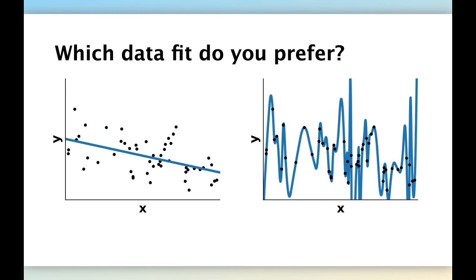For each value x, it will find the exact value of y for the observed data point on the training set. So intuitively, which prediction function do you prefer? The straight line or this large degree polynomial?